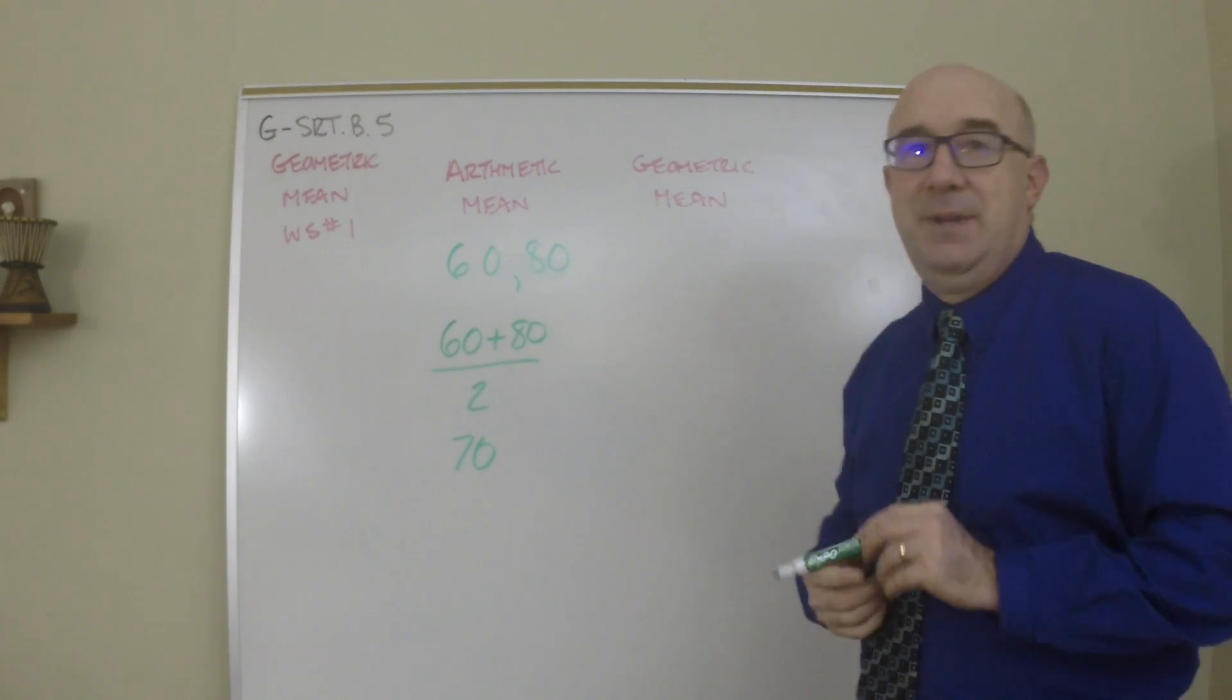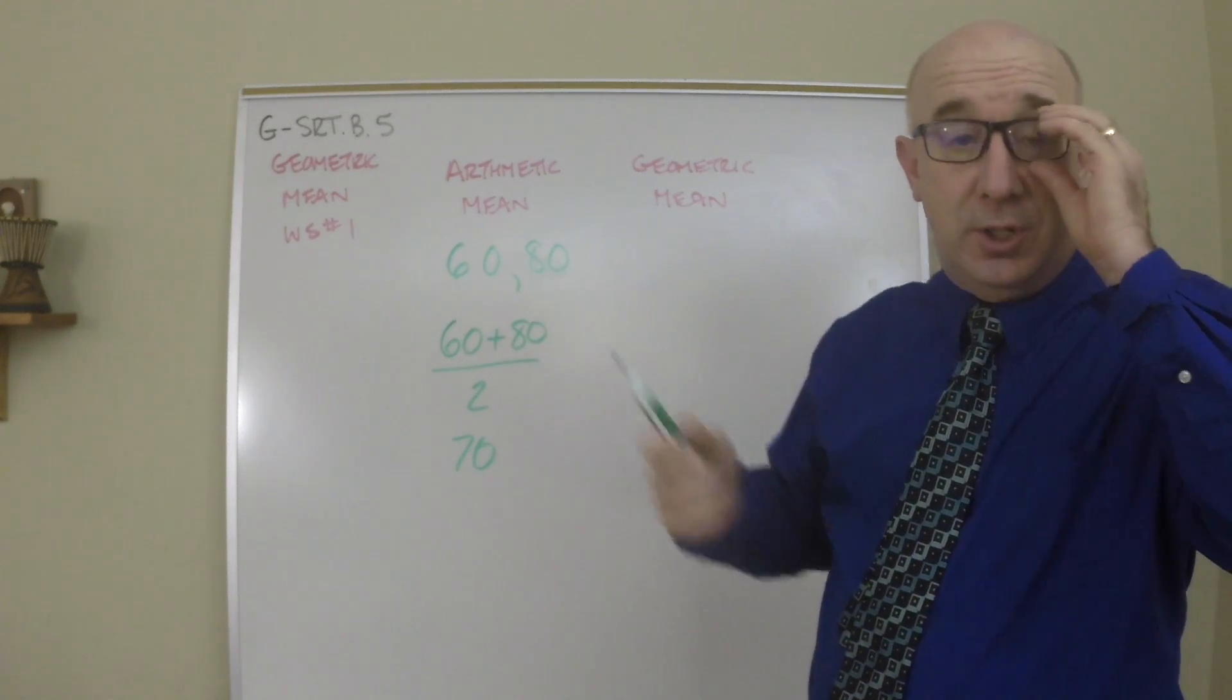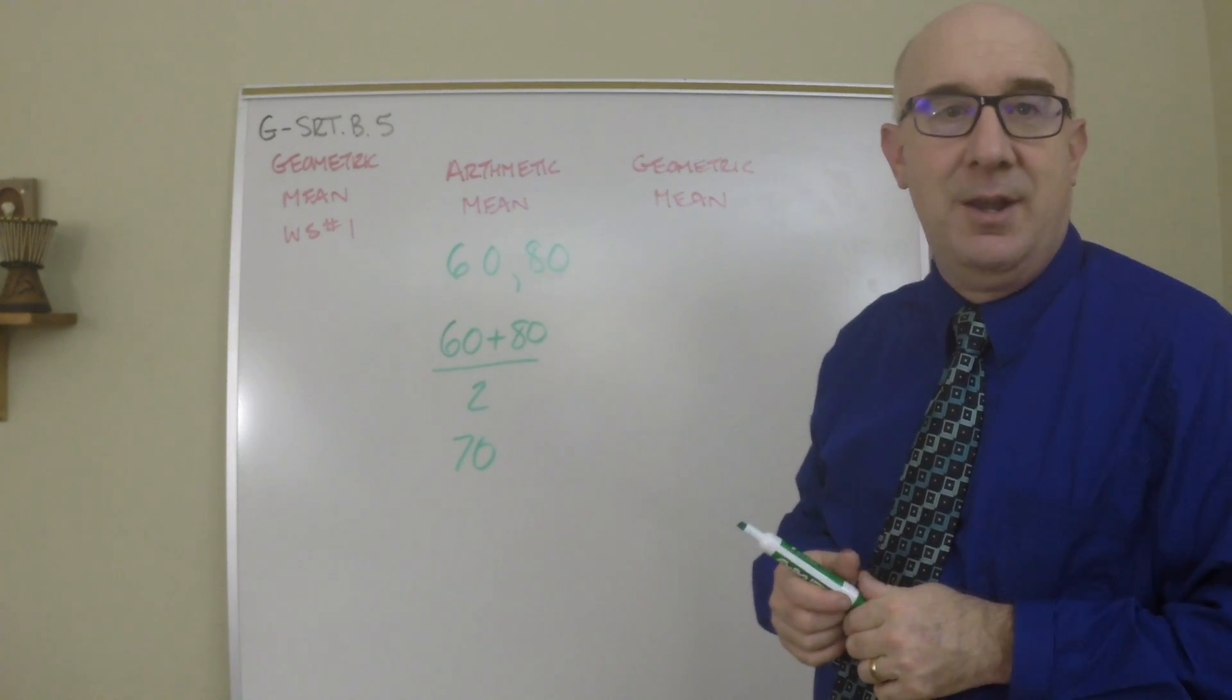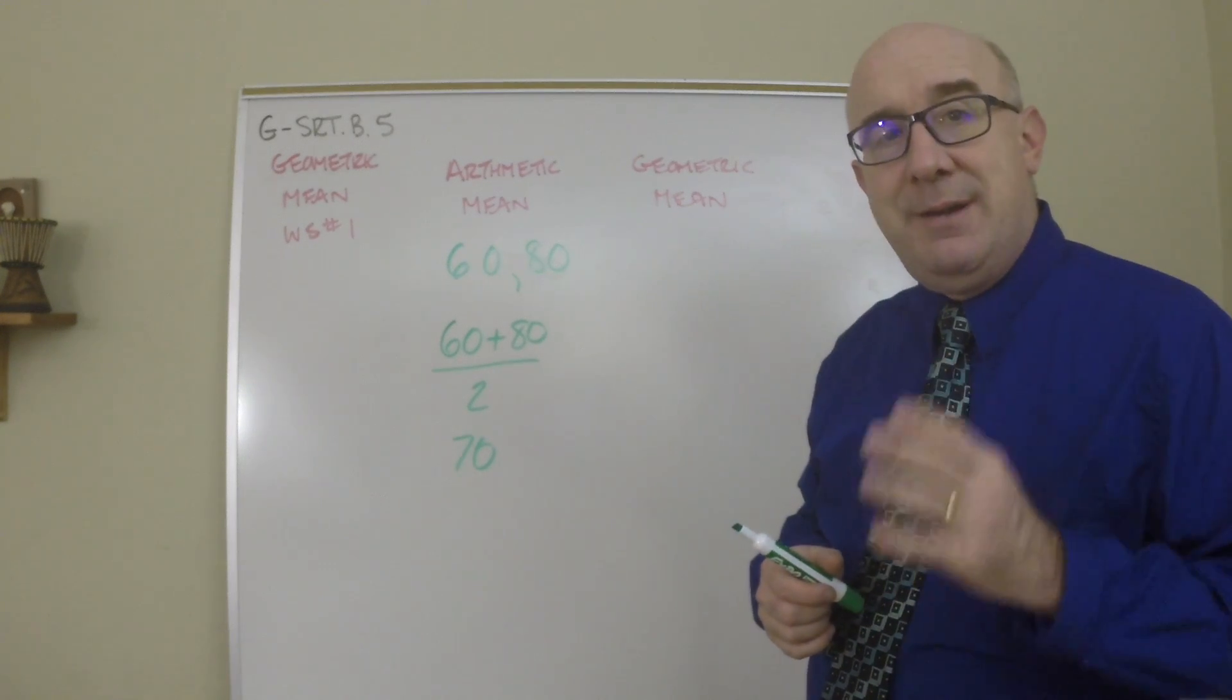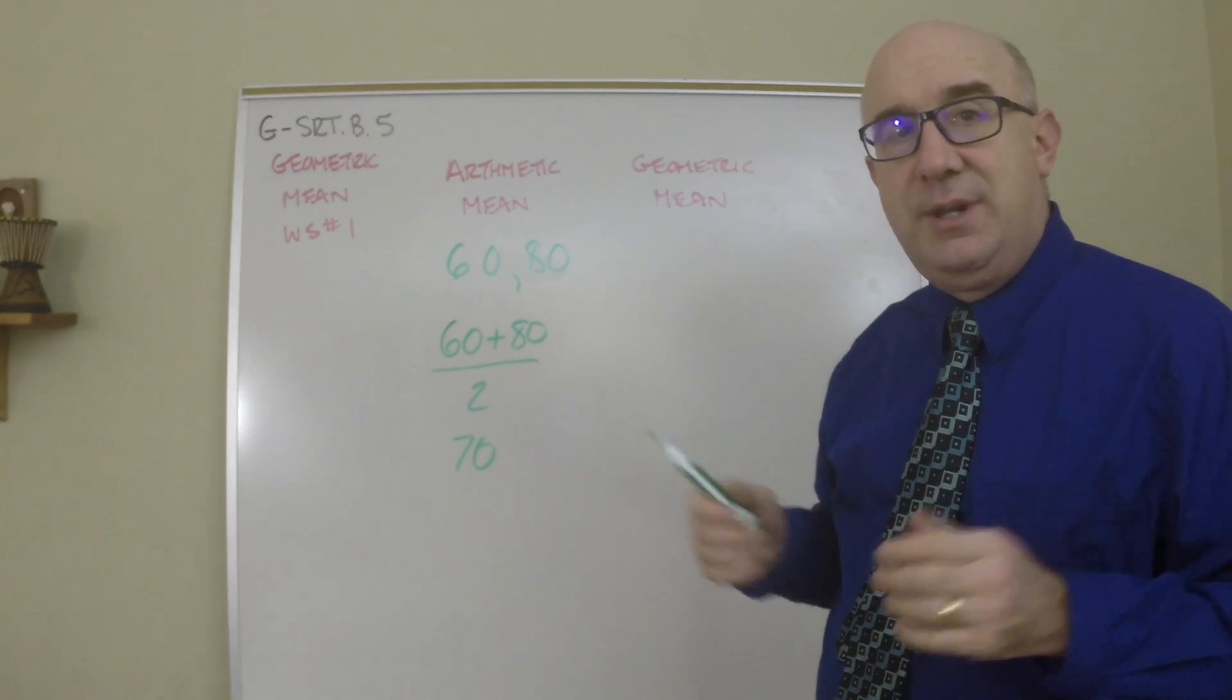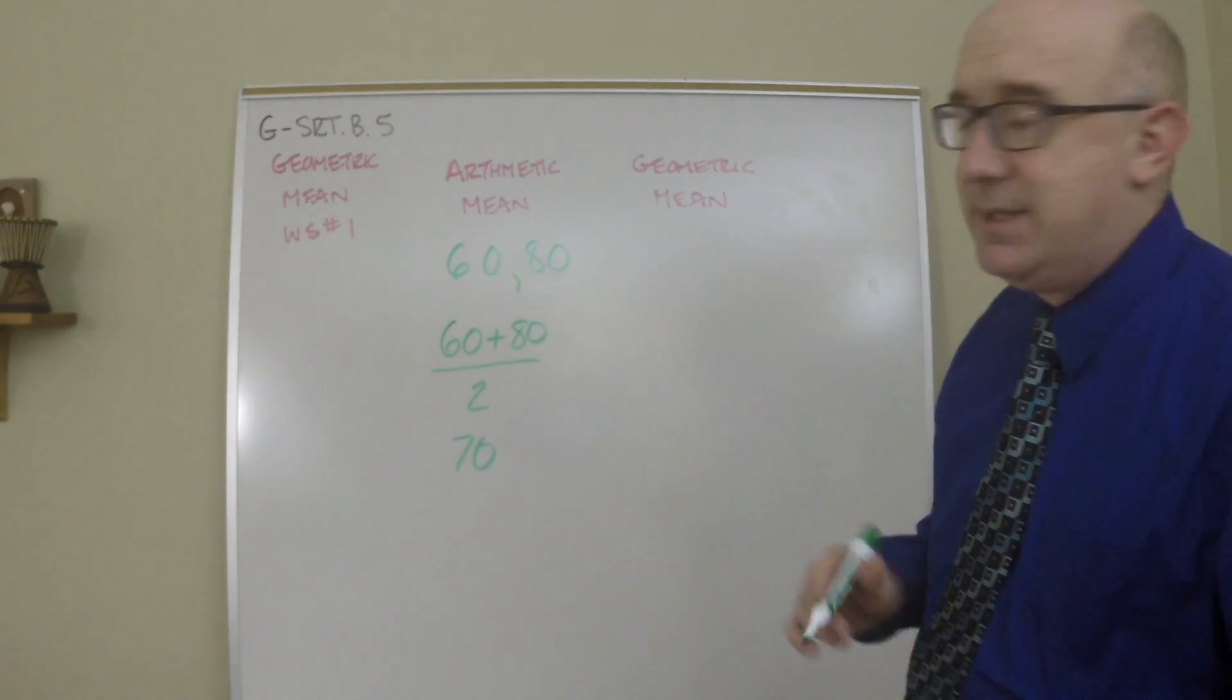Notice that the number 70 is exactly in the middle of 60 and 80. Now the geometric mean has a very geometric relationship, which I'll show you on the computer in a bit, some places where it's found. It is also a number that's between the two that you give it, but it is not the same situation here.